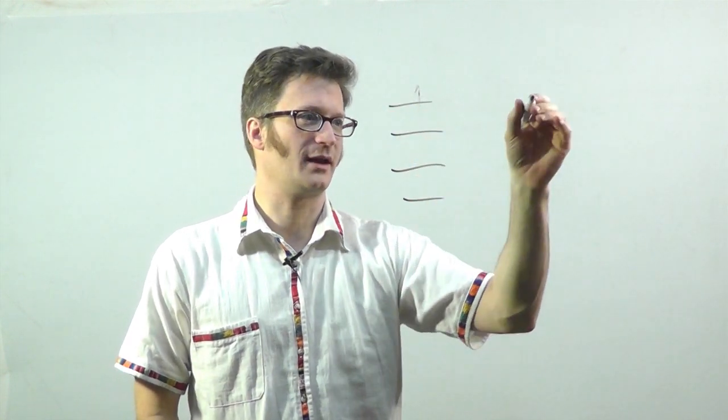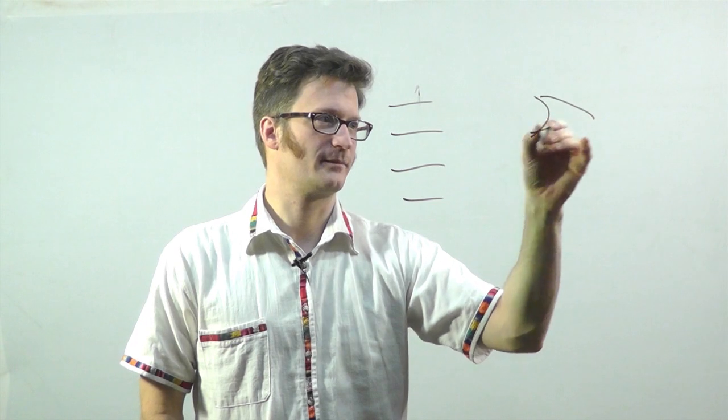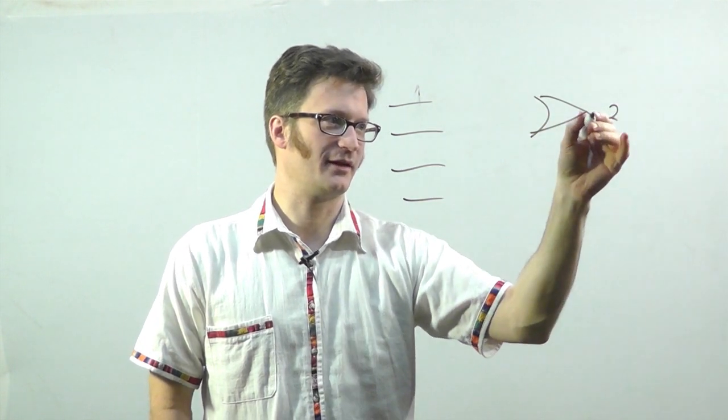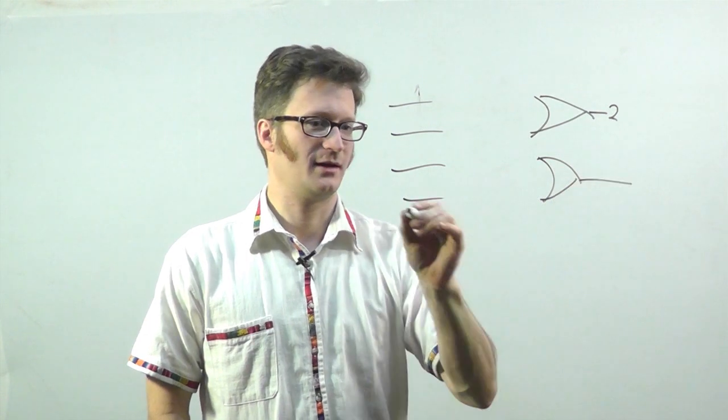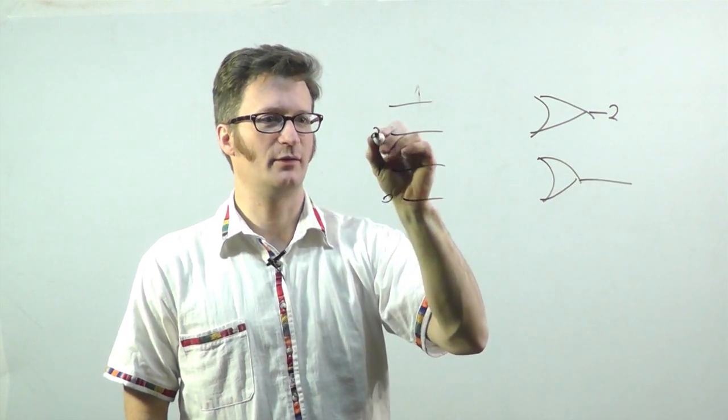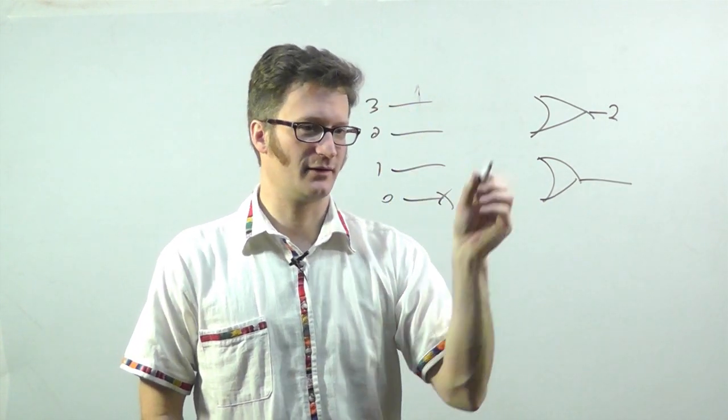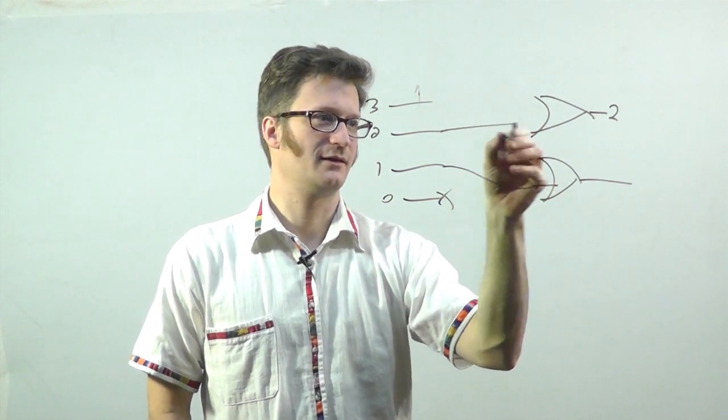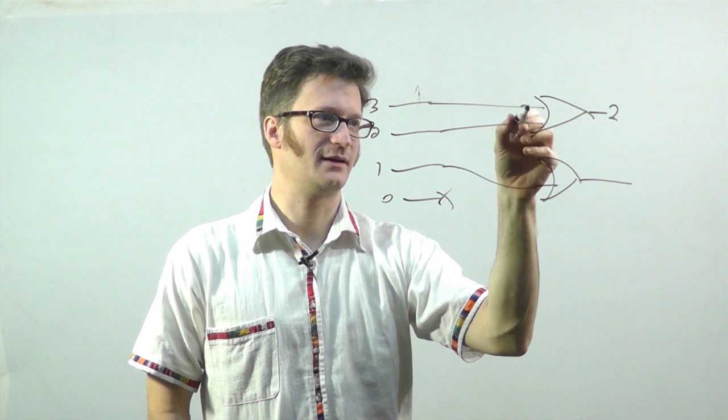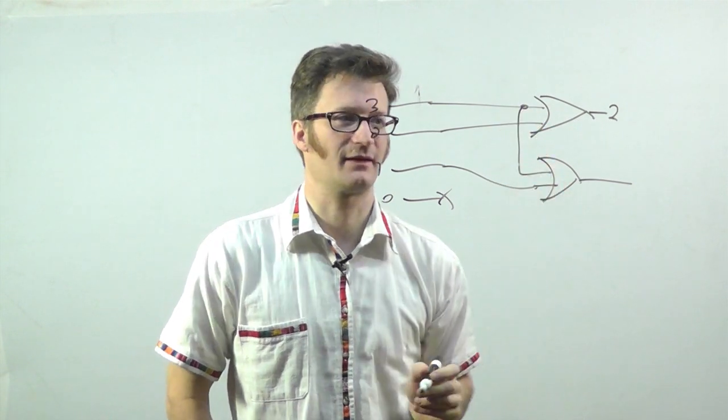If you saw my previous video about encoders, you would see that an encoder is just pretty much a bunch of OR gates, where this one might represent two, and this one represented one, and this is zero, one, two, three. Zero connects to nothing, this connects to one, two connects there, and three connects like that.